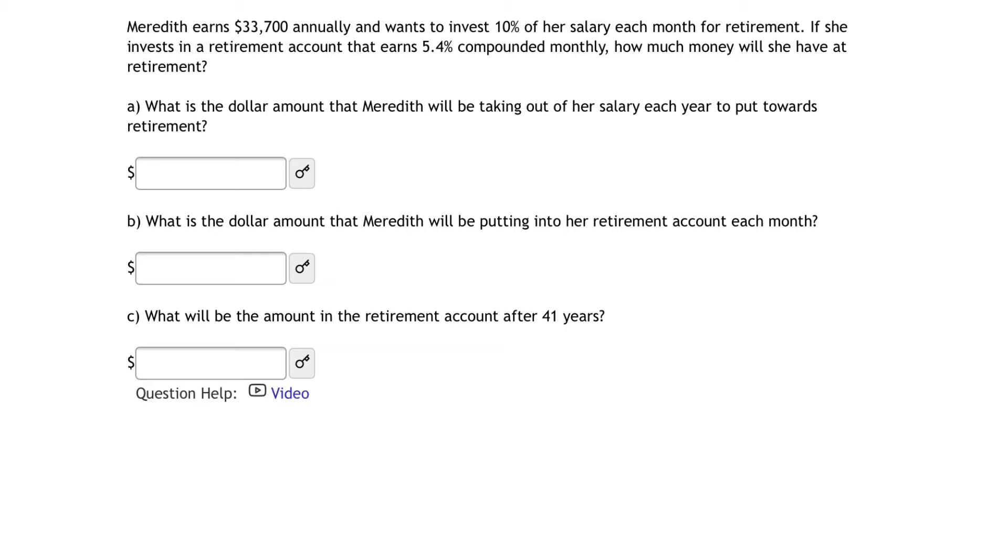All right, so here we go. What's our first question? Part A: What is the dollar amount that Meredith will be taking out of her salary each year to put towards retirement? This is actually a simple question for us. We know that Meredith earns $33,700 and wants to invest 10% of her salary each month. So if she's investing 10% of her salary each month, she's actually investing 10% of her entire salary.